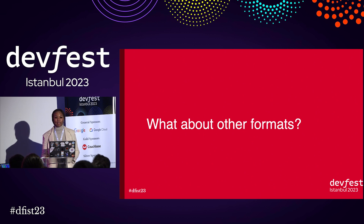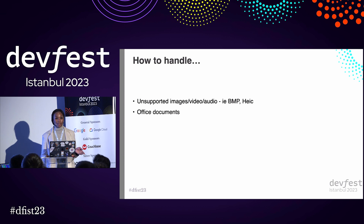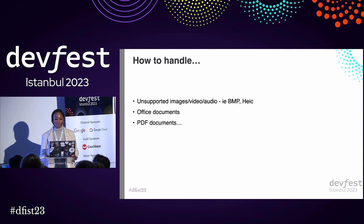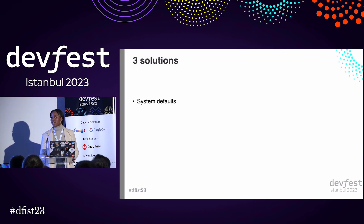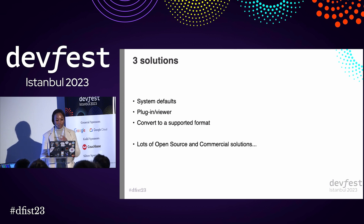Let's talk about other file formats. We spoke about some pretty simple file formats, but there are more complicated ones. Image, audio, and video file formats are normally quite easy to work with — for example, you can easily convert HEIC into PNG. But there are harder file formats that are more complex, such as ones with multi-page layouts like Office and PDF. Most documents can be converted into PDF, so if you can convert to PDF, you can do anything. We're going to go over some solutions: you could let your system open it based on system defaults, use a plugin viewer, or convert to a supported file format. There are many open source and commercial solutions.